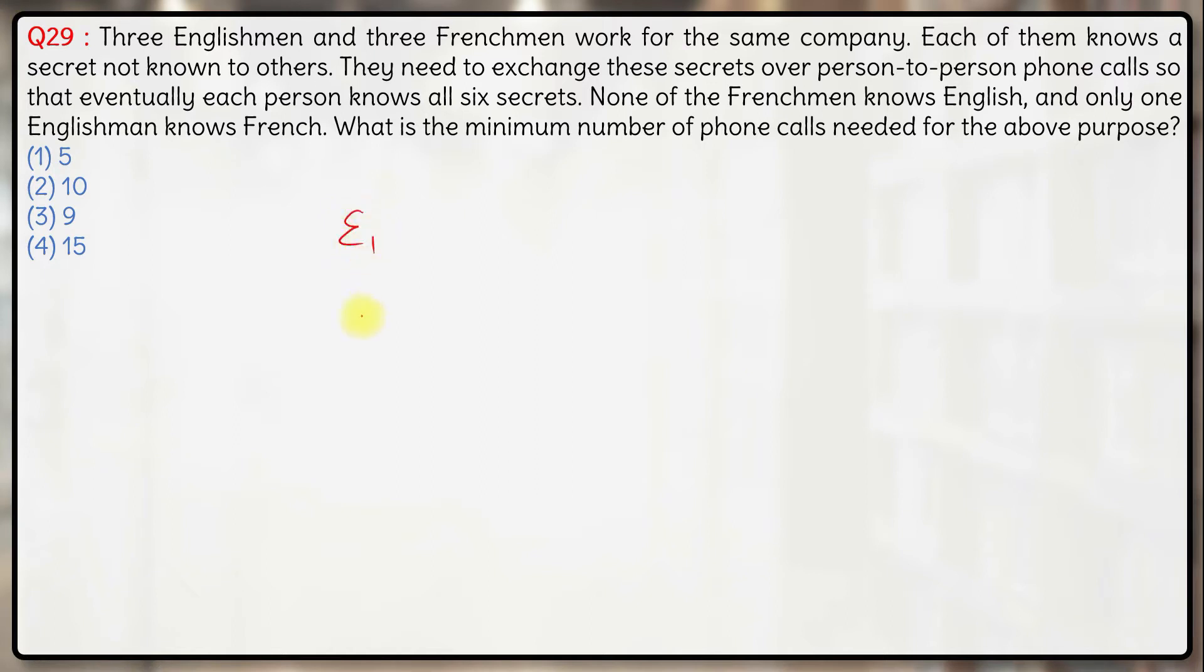So we have three Englishmen and three Frenchmen: E1, E2, E3, F1, F2, F3.